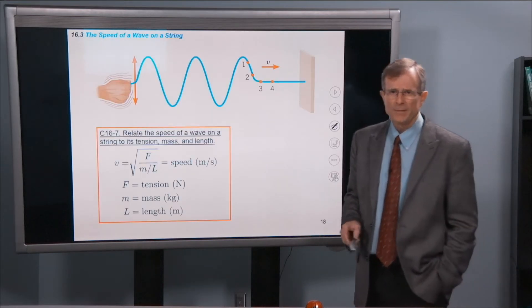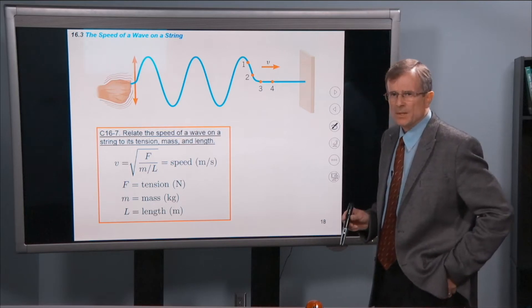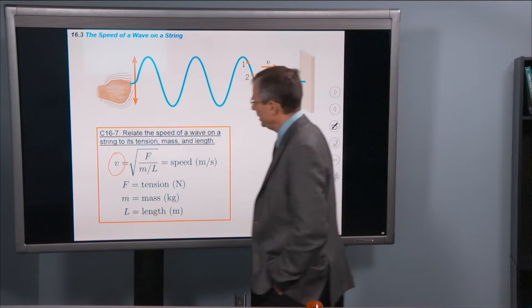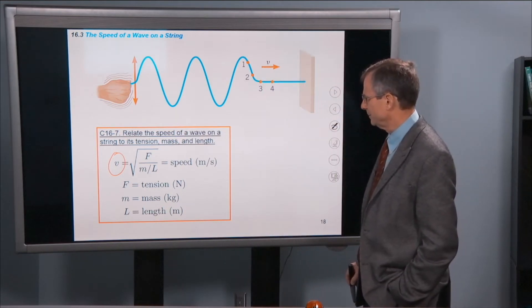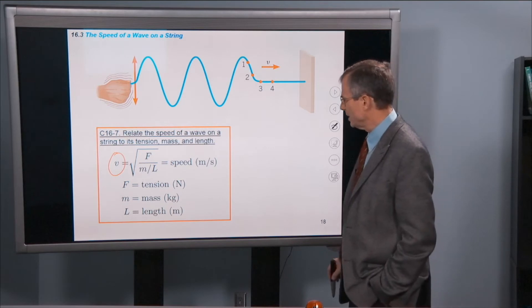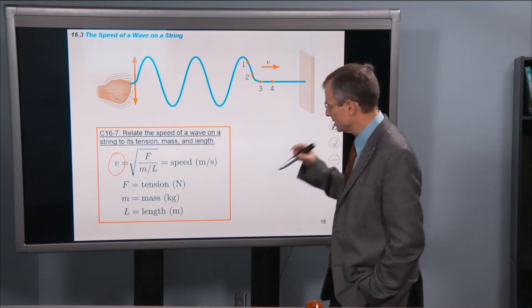Alright, speed of wave. This is the speed of a wave on a string. And it is related to the tension, mass, and length in this relationship.